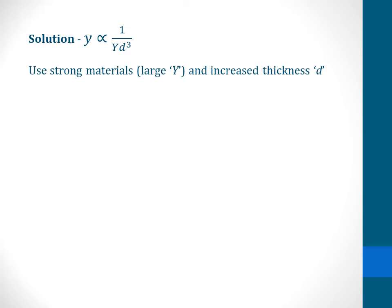One solution to reduce depression is to reduce the length of the beam, but this cannot be done as the length is constant for most applications. We can also decrease the breadth, but this is not a viable or economical option. Therefore, the only solution is to have stronger materials and to increase the thickness d. A small increase in thickness will drastically reduce the depression since d is to the power of 3.